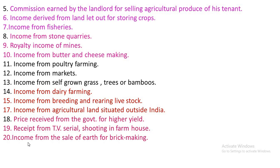Number 6 — Income derived from land let out for storing crops: If an individual lets out his land to store crops of a third party, the income received from that party shall be treated as non-agricultural income. Number 7 — Income from fisheries: non-agricultural income, i.e., business income. Income from stone quarries is also non-agricultural income.